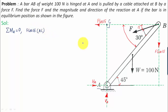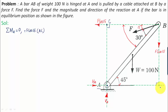Using the right-hand rule, F cos 15 produces an anti-clockwise moment, taken as positive. For force F sin 15, we drop a perpendicular from A to its line of action, meeting at point D. Using the right-hand rule along that direction, F sin 15 produces a clockwise moment, taken as negative. So its contribution is minus F sin 15 multiplied by perpendicular distance AD.